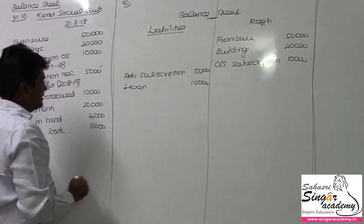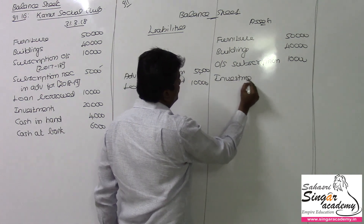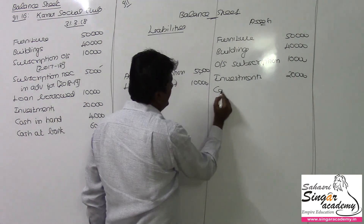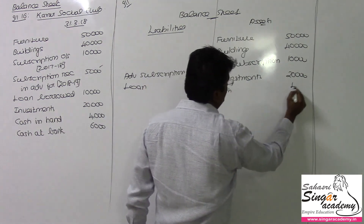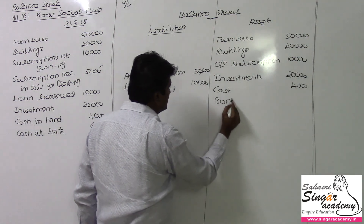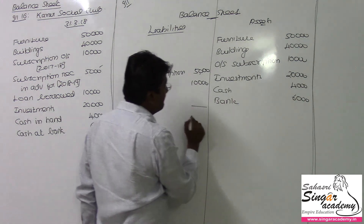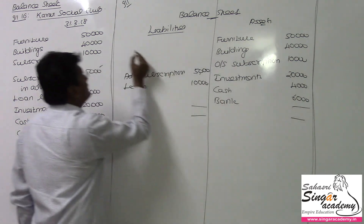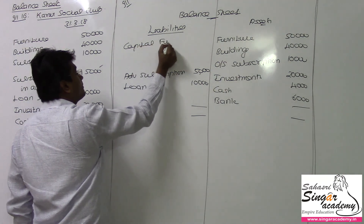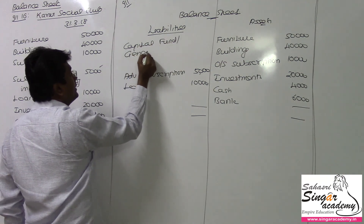Investments of 20,000 rupees go on the asset side. Cash in hand is 4,000 rupees, and bank balance is 6,000 rupees. Now let's close the balance sheet and find out the capital fund, which is the balancing figure — also called general fund or accumulated fund.